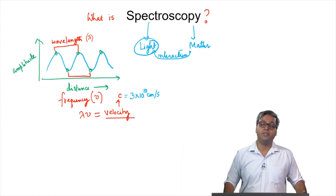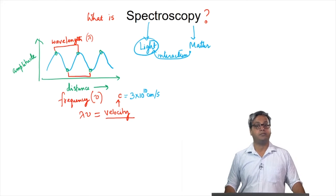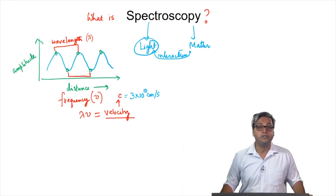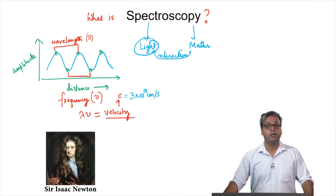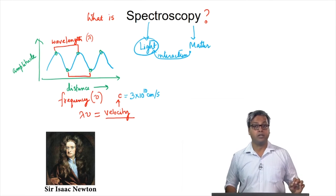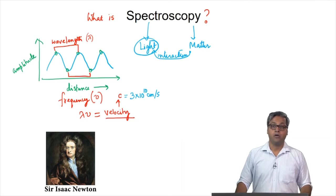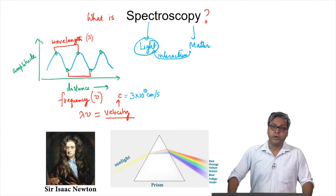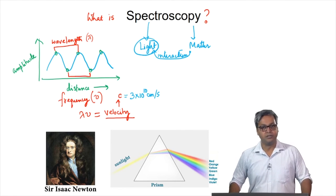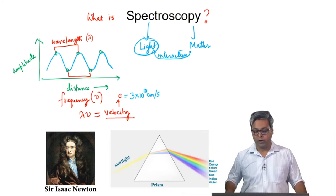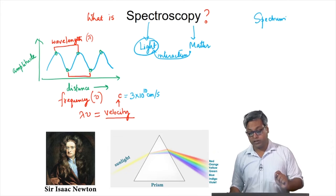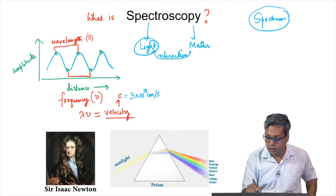However, the light that we normally see around us — for example, sunlight — is a composite light. That means this light is not composed of a particular frequency or a particular wavelength, but is composed of several wavelengths or several frequencies. In fact, in 1671, Newton showed that when sunlight is passed through a glass prism, we get a rainbow-like band where the components of the light are arranged in the order of their wavelengths. Thus, if we spread the electromagnetic wave into its different constituents in terms of wavelengths or frequencies, what we get is called a spectrum. And the process of getting the spectrum is called spectroscopy.